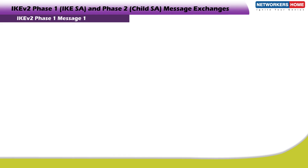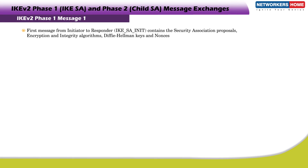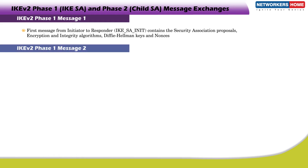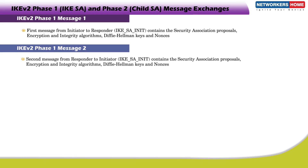IKE V2 Phase 1 Message 1: In IKE V2, the first message from Initiator to Responder contains the Security Association proposals, encryption and integrity algorithms, Diffie-Hellman keys, and nonces. IKE V2 Phase 1 Message 2: The second message from Responder to Initiator contains the Security Association proposals, encryption and integrity algorithms, Diffie-Hellman keys, and nonces.